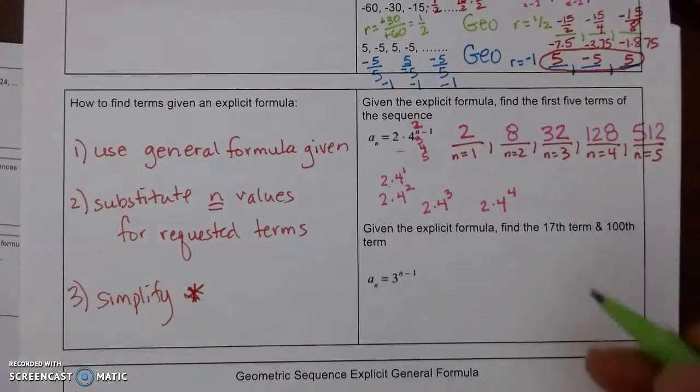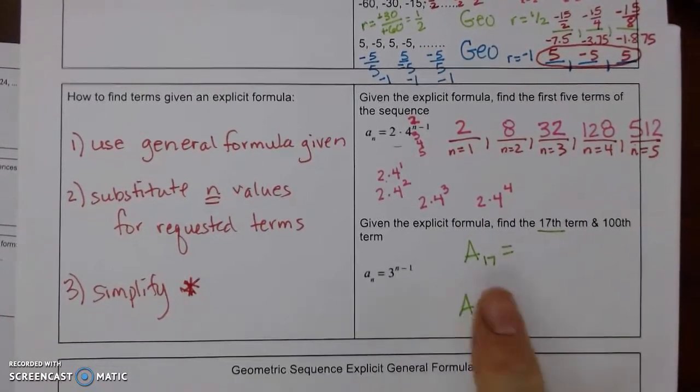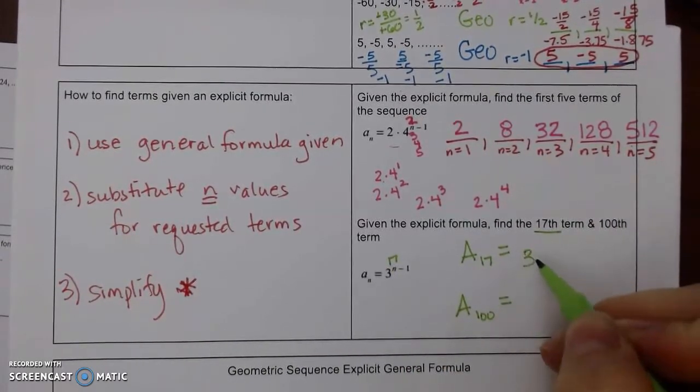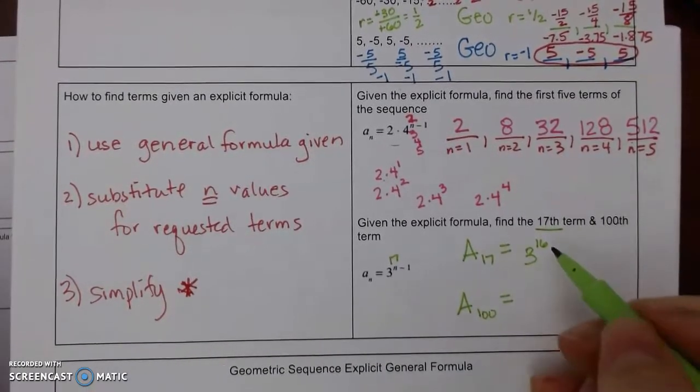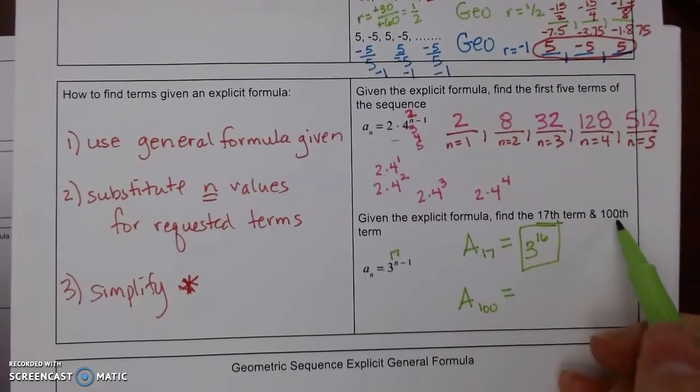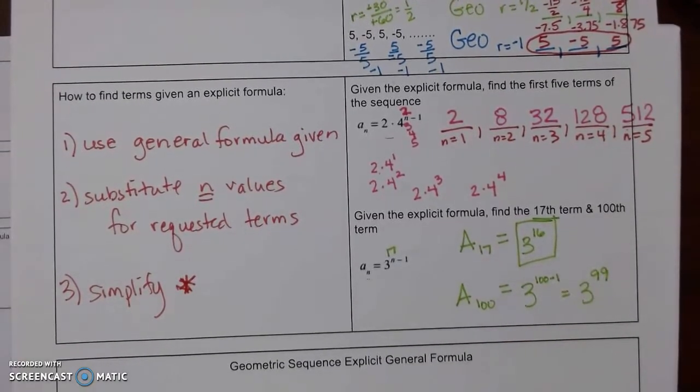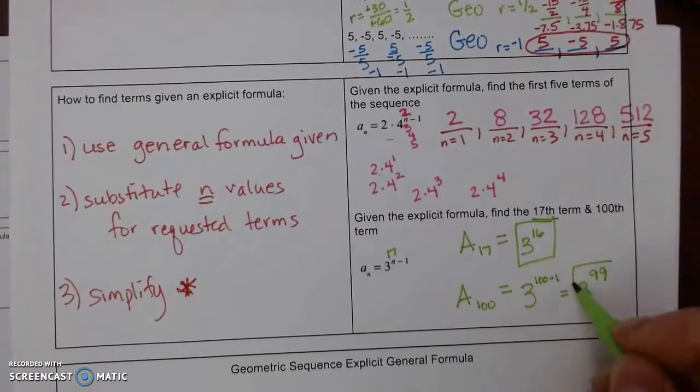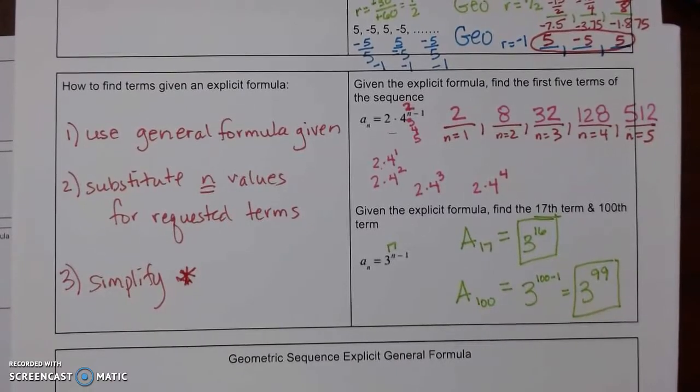Given the explicit formula, we want to find the 17th term and the 100th term. Our 17th term, we're going to substitute 17. So we get 3 to the 17 minus 1 is to the 16th power. That is a really large exponent. We'll see if your calculator does it. Then, we can just leave that answer. The 100th term is definitely going to be too large. You don't want anything that is written with a decimal, because your calculator is doing that in scientific notation. So if your calculator did 3 to the 16th, go ahead and write that answer. If it doesn't, these are good.